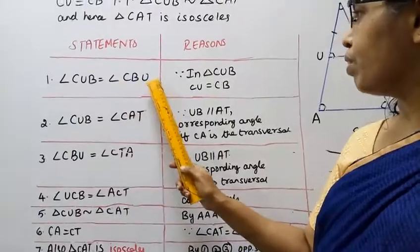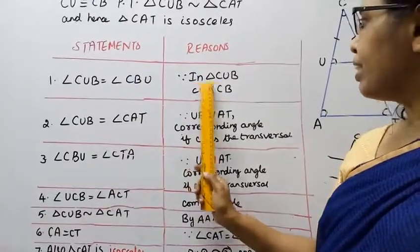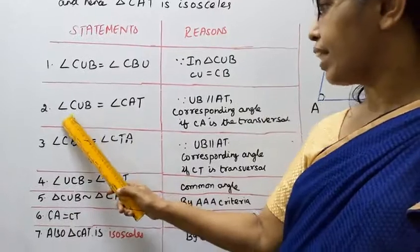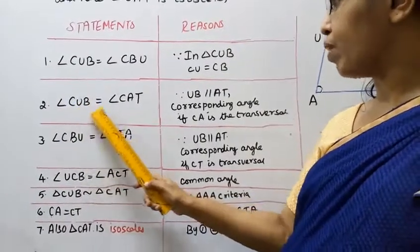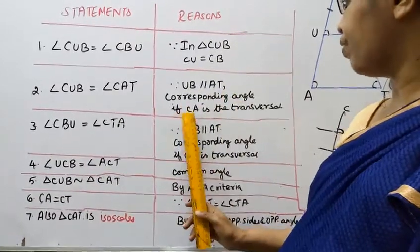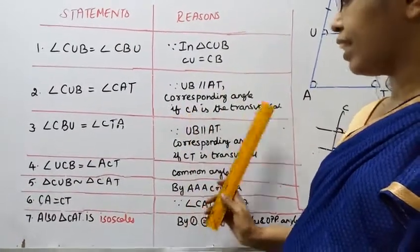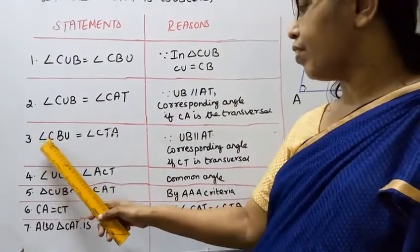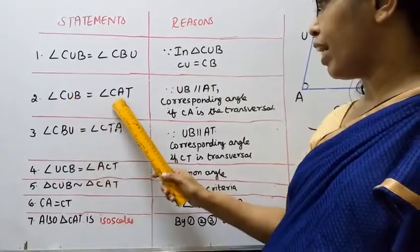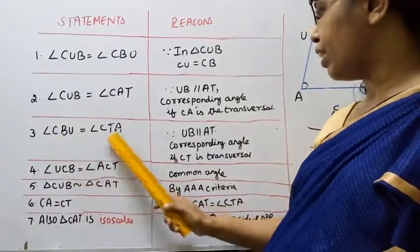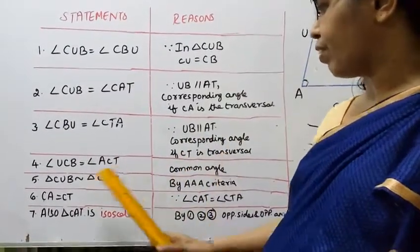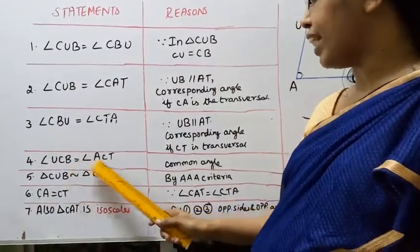Angle CUB is equal to angle CBU. In triangle CUB, CU is equal to CB. Angle CUB is equal to angle CUT. UB is parallel to AT — corresponding angle, CA is the transversal. Angle CBU is equal to angle CTA. Corresponding angle, CT is the transversal. Angle UCB is equal to angle ACT.